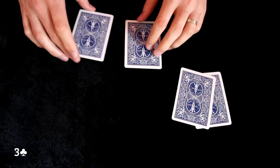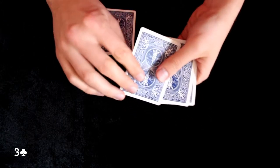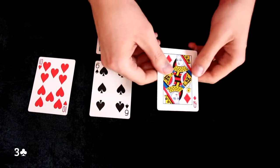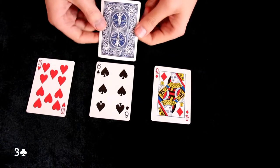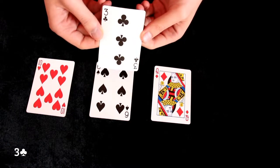We will stay with this card so I will remove that card and I will show you that the cards that were not selected are ten, six and queen and the card that is left here is three of clubs. Is it your card?